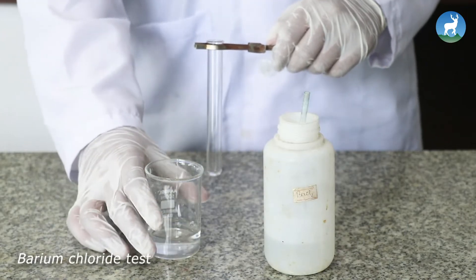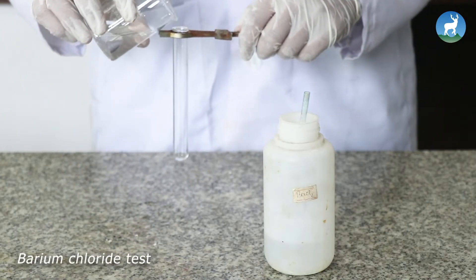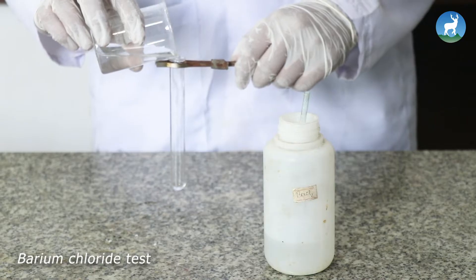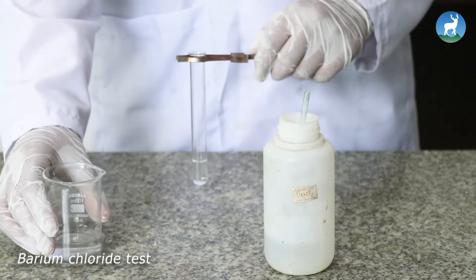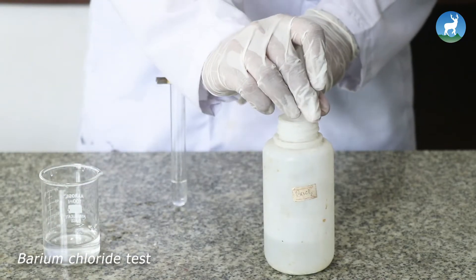Barium chloride test: Take 1 ml of original solution in a clean test tube. Add few drops of barium chloride solution.